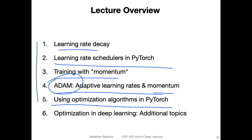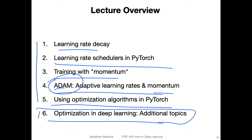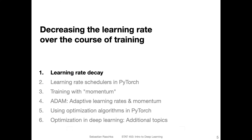I'll show you how to use these algorithms in Python. There are also many other algorithms besides Adam and momentum that have emerged in recent years. I have a list of topics I find interesting and do some reading on regarding the latest trends. I'll make a separate video outlining some of these advanced topics — you won't need to know them in detail, but for those interested in reading beyond the scope of the class, I'll include some references to check out on your own. Alright, let's get started with the first topic: learning rate decay.